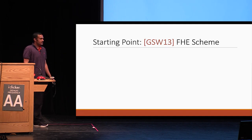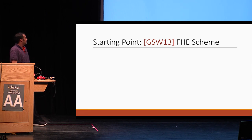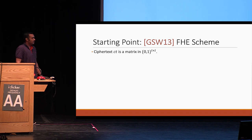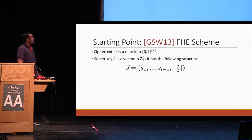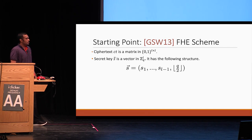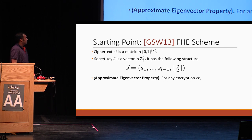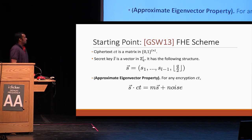Our starting point is the GSW FHE scheme. In GSW, the ciphertext is a matrix of dimension L×L with entries 0 and 1. The secret key S is a vector in Z_Q^L, where Q is some modulus. The secret key has the structure that the first L-1 components are random, whereas the last component is the floor of Q by 2. This GSW scheme satisfies what's called the approximate eigenvector property, which says that if you have any ciphertext CT, when you multiply S with CT, what you get is the message times the secret key plus a noise — where message is what was encrypted inside the ciphertext and noise is just a small vector.